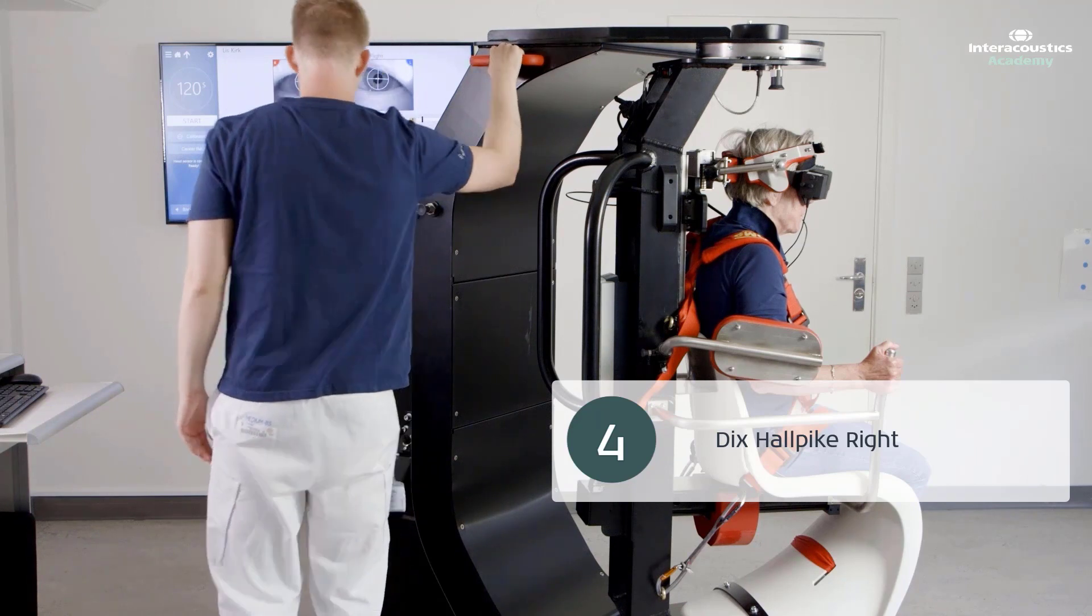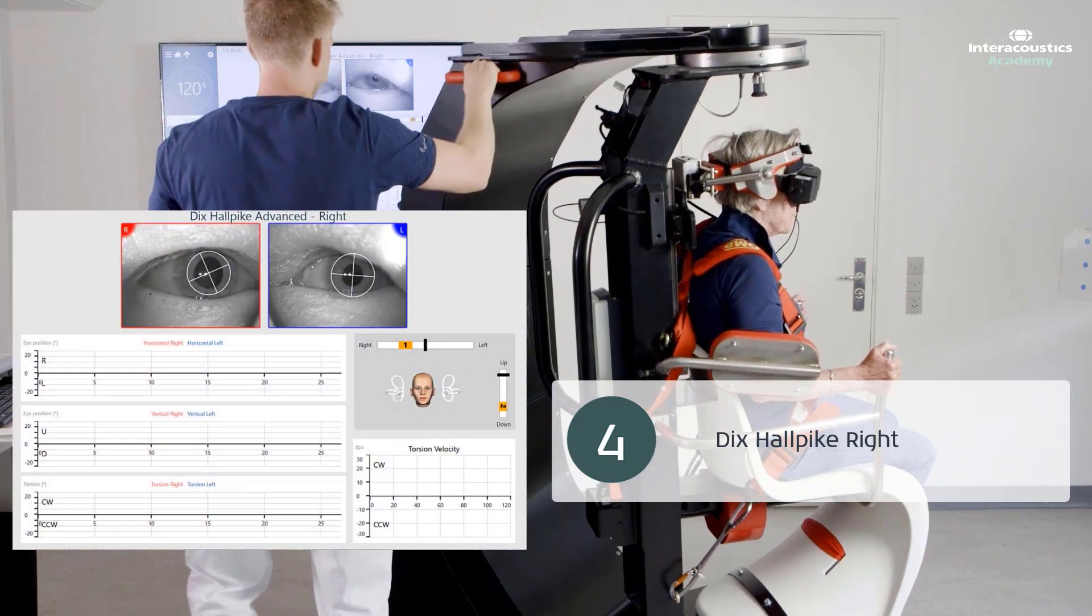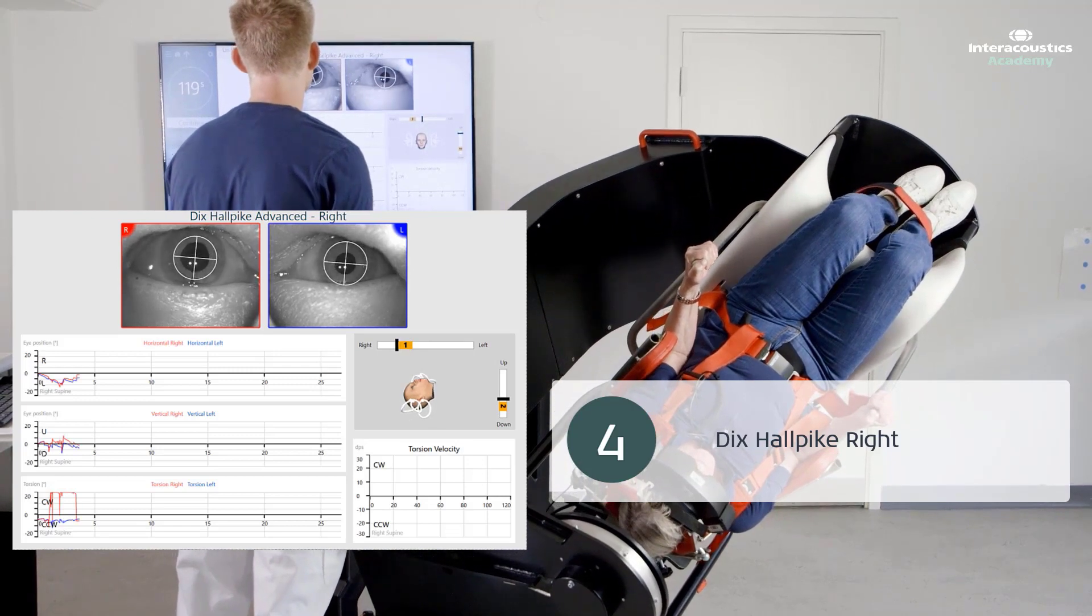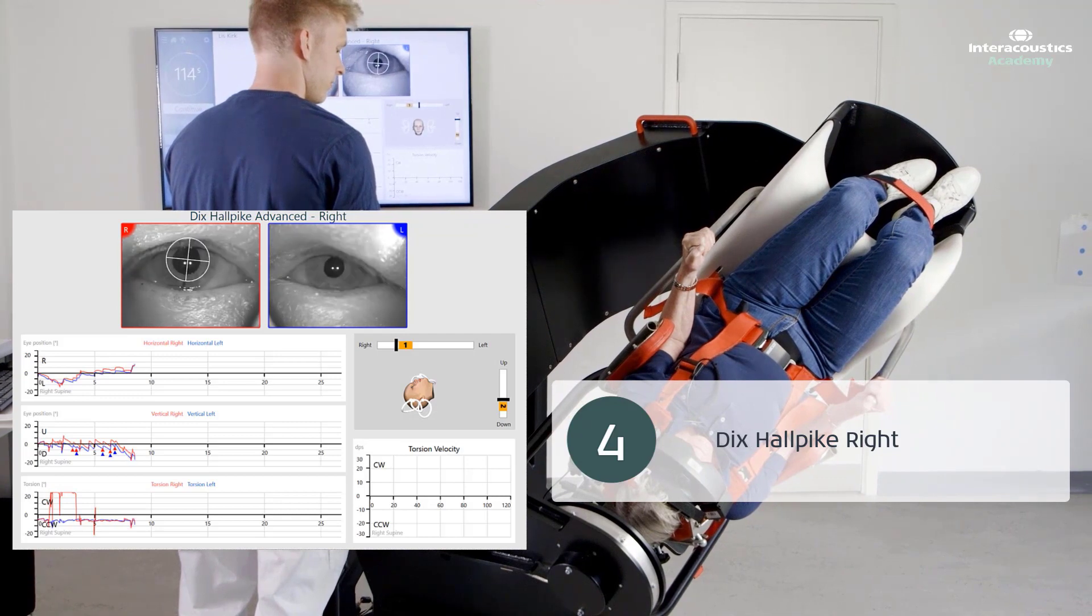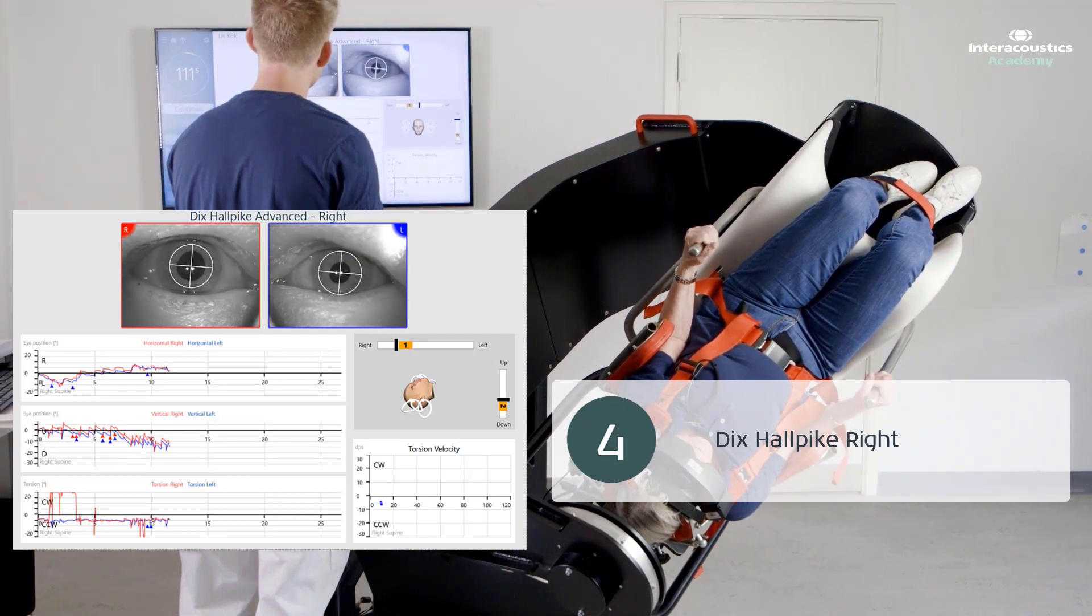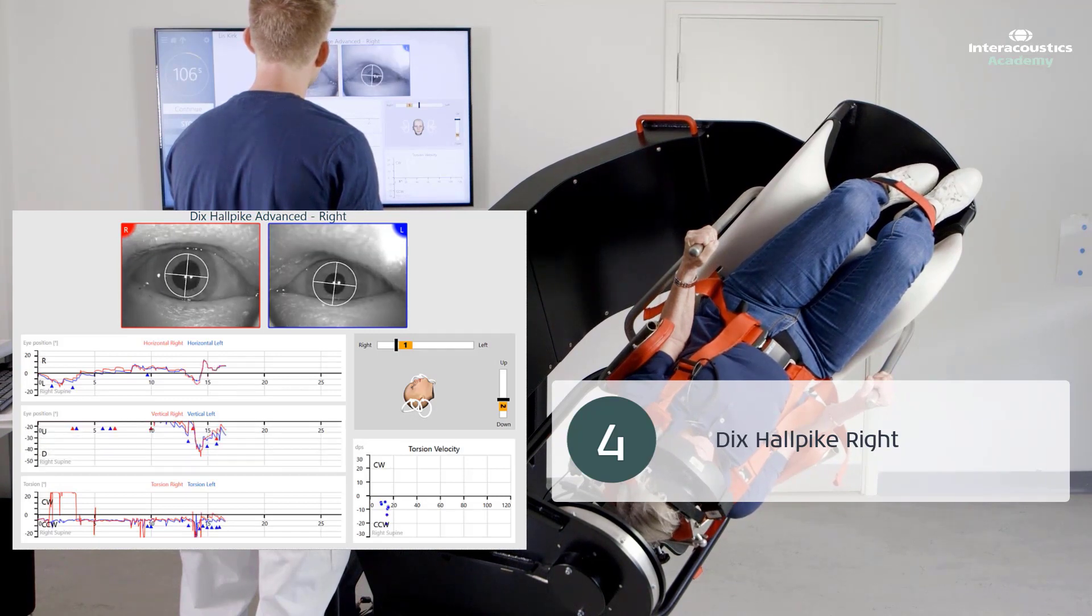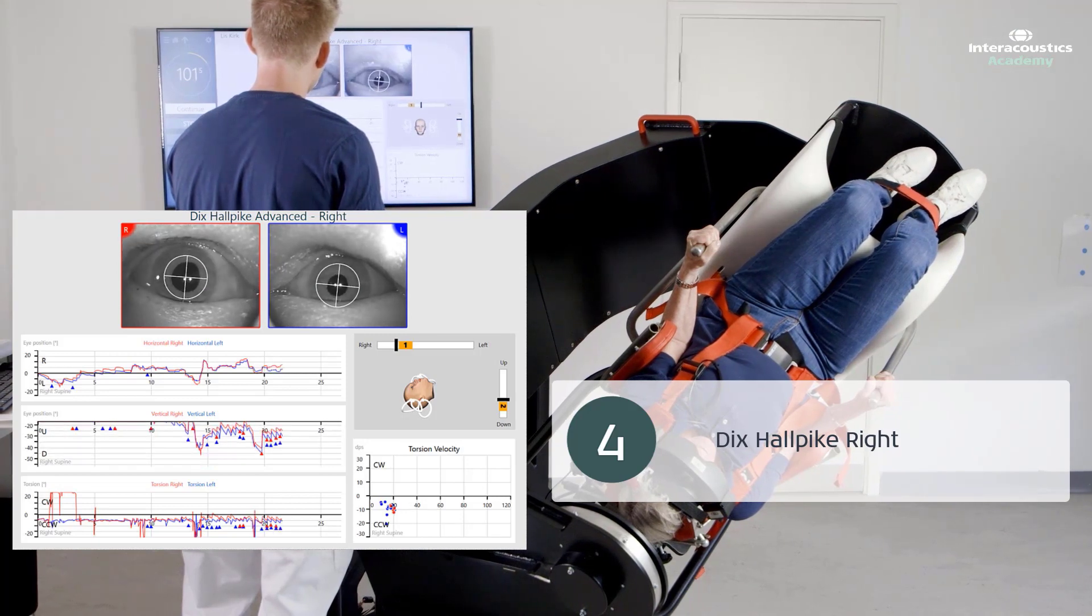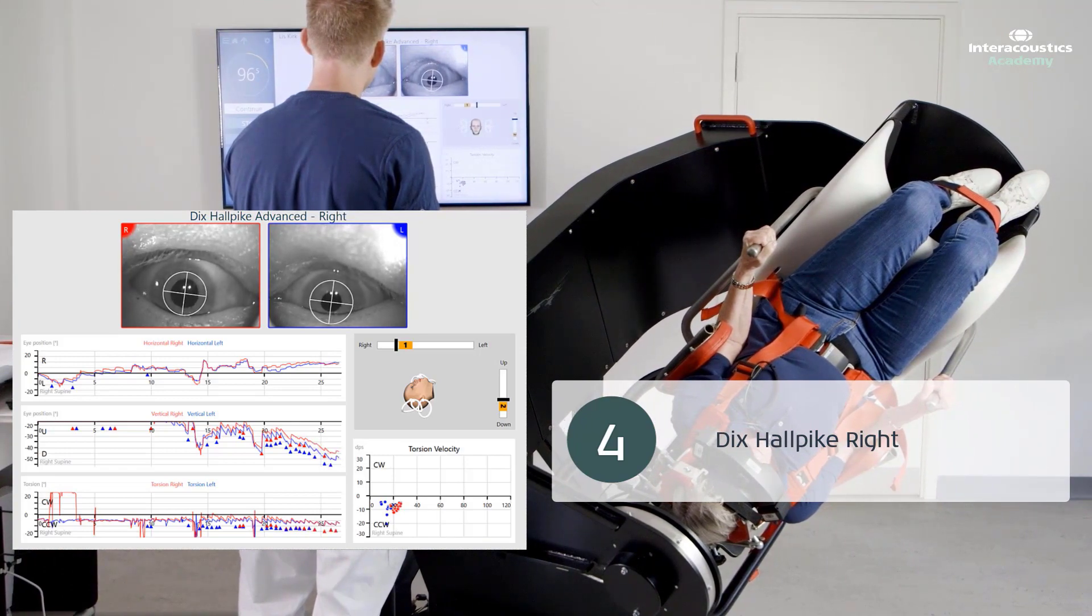Then a right Dix-Hallpike test was performed. Again, observe and note any latency before observation of positional nystagmus. Also observe and describe if the induced positional nystagmus is continuous or follows a 10-30 seconds crescendo-decrescendo pattern. Continuous upbeat and rotational nystagmus is again observed throughout the observation period. The patient also complains of a continuous concomitant spinning sensation throughout the entire right Dix-Hallpike test position.